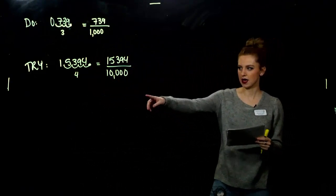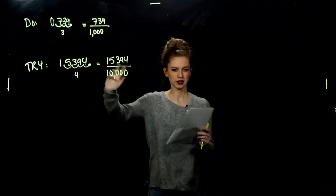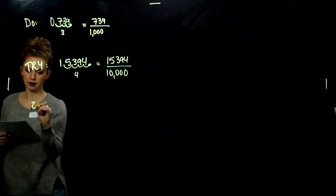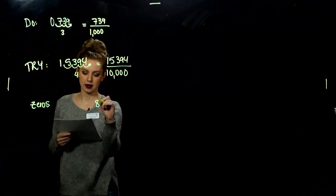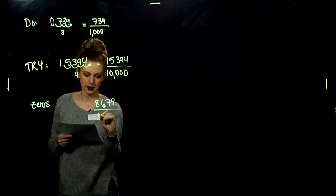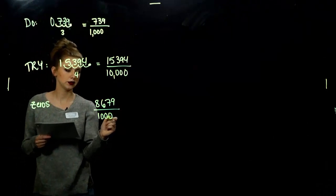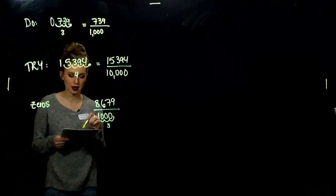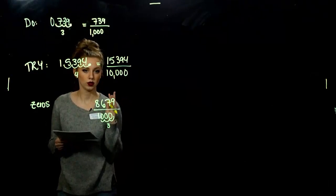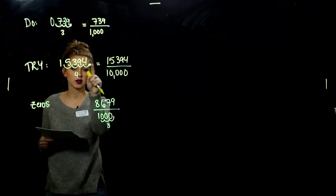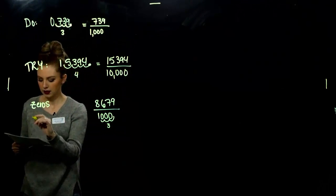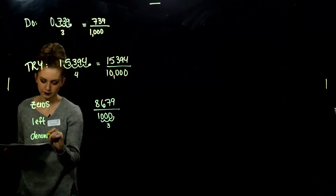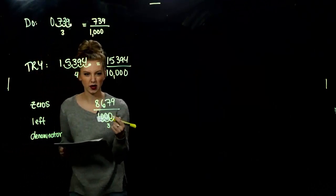Now what about going backwards? If I have fraction notation and want to write it as a decimal, we just reverse that process. We count the number of zeros in the denominator, then move the decimal point that many places to the left and leave off the denominator. From decimal to fraction we moved to the right; now we want to do the opposite and move to the left.